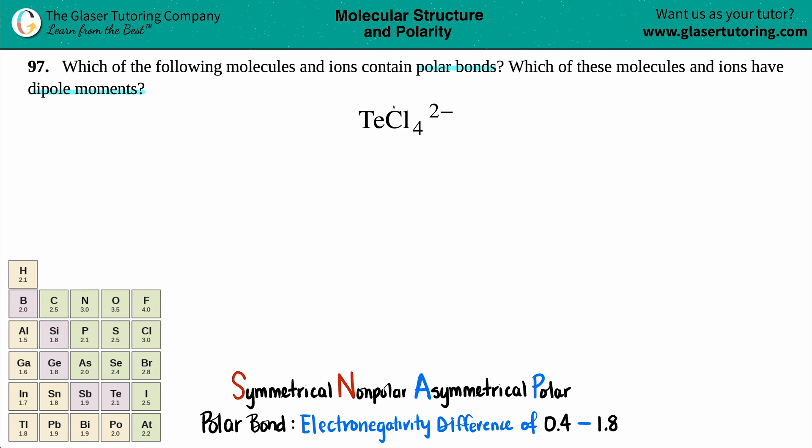Especially if they're asking for polarity — if something is polar or non-polar — the easiest way to go about this is to take a step back and draw out the Lewis structure of what this actually looks like. I know that it's one extra step, but seeing it visually will help you figure out what's really going on. There are tons of videos on this channel designated to teaching you how to draw the Lewis structure, so this will be a quick overview. You can always pause the video and draw out the Lewis structure for TeCl₄²⁻ and see if your answer matches mine.